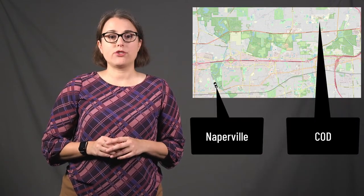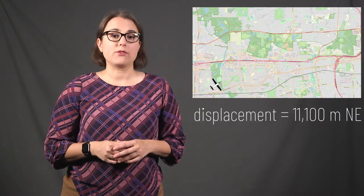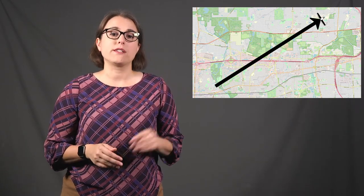Let's look at a more complicated example — driving a car from Naperville to the College of DuPage. When driving a car, it isn't always possible to go in a direct straight line. Instead, somebody driving has to follow the roads. This route describes the path of the car. The path from Naperville to COD would therefore include the entire route that is driven. The path in this specific example is 15,600 meters or 15.6 kilometers. The displacement between Naperville and the College is 11,100 meters or 11.1 kilometers northeast — the straight-line change in position from start to finish. Regardless of the path taken, the displacement remains the same; it is always the vector pointing from the starting point to the finishing point.